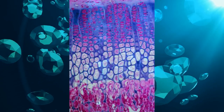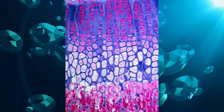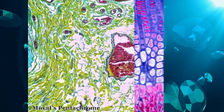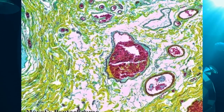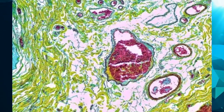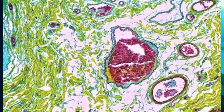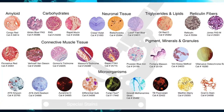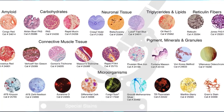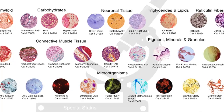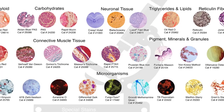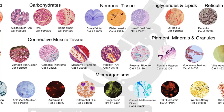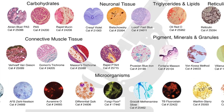Histological stains are often used to add colors to, or enhance the colors of, certain types of biological structures differently from other types of structures, so biological structures can be identified more easily and accurately.